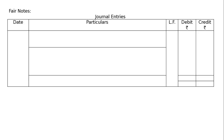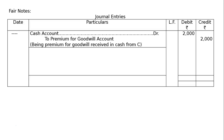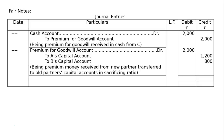Journal entries format: date, particulars, folio, debit and credit with rupees symbols. First entry: cash account debited to premium for goodwill account, debit column rupees 2000, credit column rupees 2000, being premium for goodwill received in cash from D. Second entry: premium for goodwill account debited to B's capital account rupees 1200, to C's capital account rupees 800, being premium money received from new partner transferred to sacrificing partners' capital accounts in sacrificing ratio. Journal totaled at rupees 4000 each.